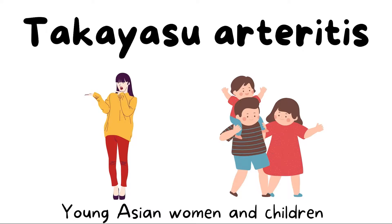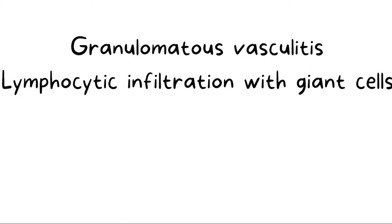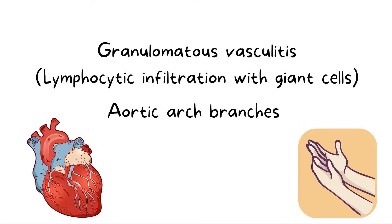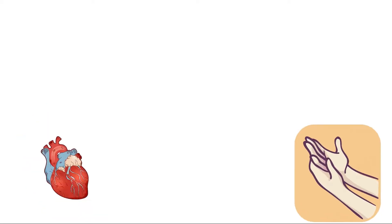Takayasu Arteritis is more common in young Asian women and children. It is a granulomatous vasculitis — granulomas are lymphocytic infiltration with giant cells — and as mentioned, it usually involves the aortic arch branches like the subclavian artery and common carotid artery.